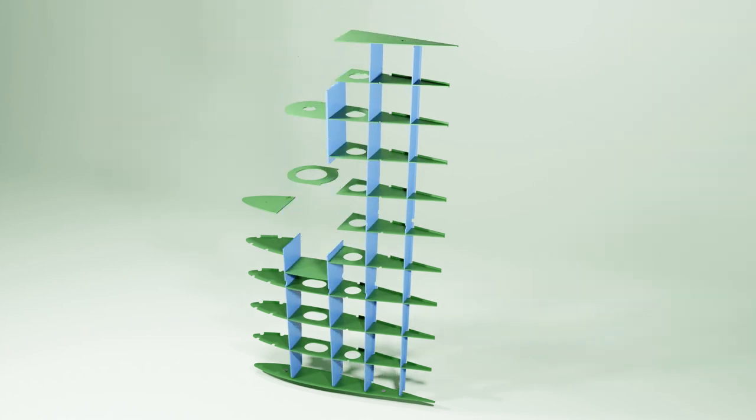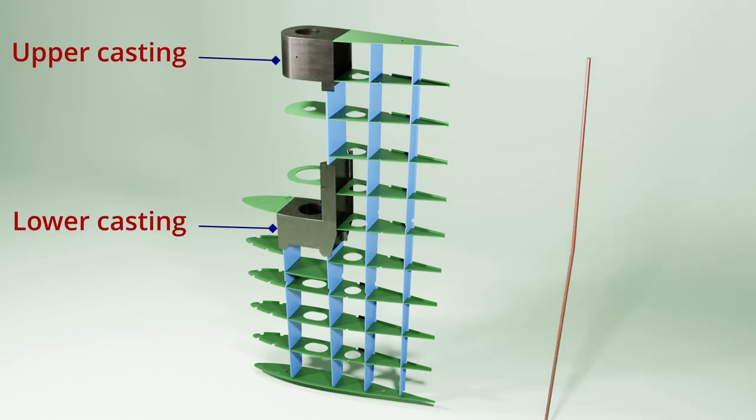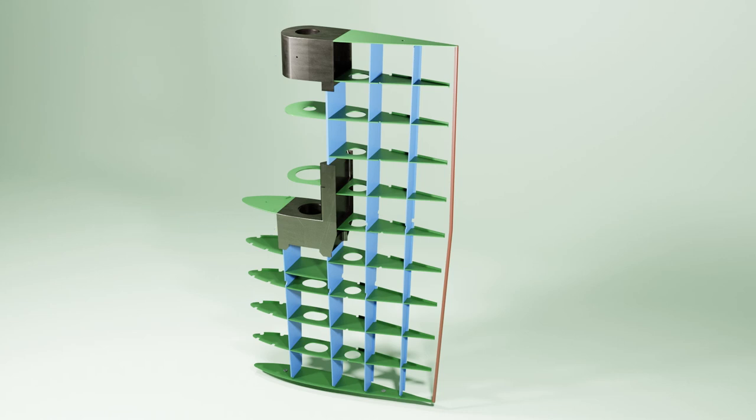Two steel castings are welded to this internal structure. These castings allow the rudder to be fitted to the rudder stock and pintle. Finally, a round bar which is called trailing edge round bar is fitted to the aft of the structure connecting the top and bottom arms.